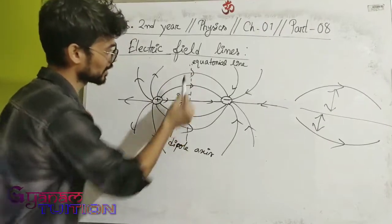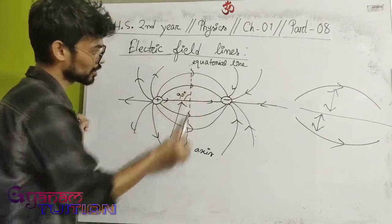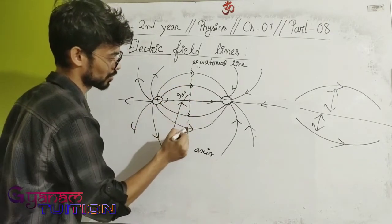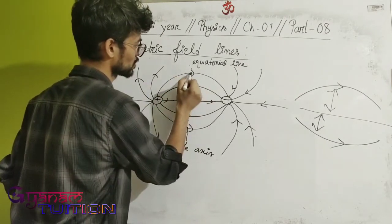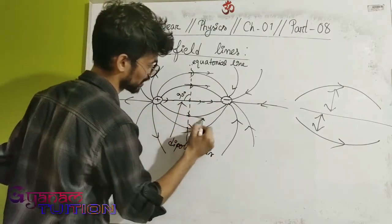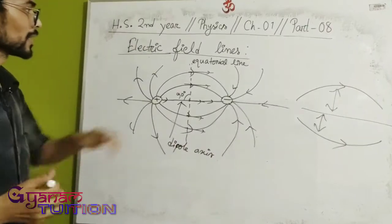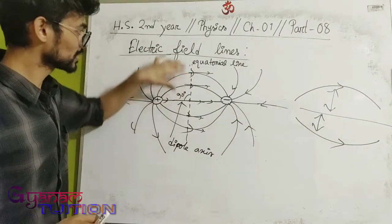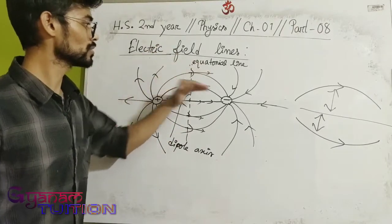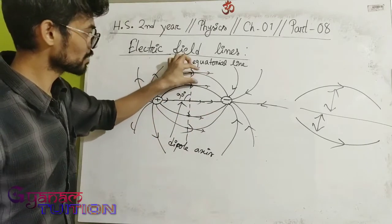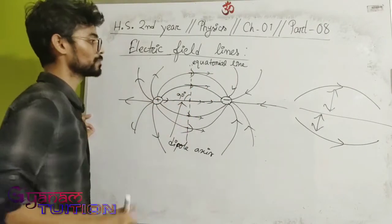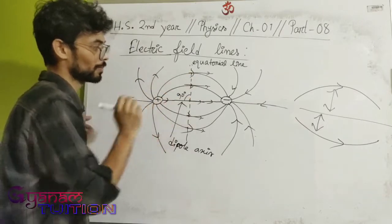Regarding the equatorial line: at any point on the equatorial line, the tangent drawn gives the direction of the electric field. For all points along the equatorial line, the direction of the electric field is the same — they are parallel to each other.